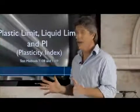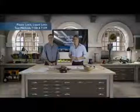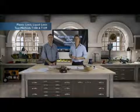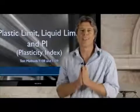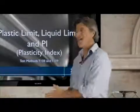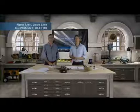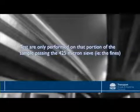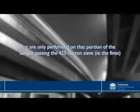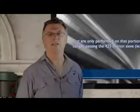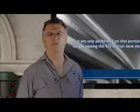The PI is useful because it gives an indication of the plastic characteristics of a soil or gravel, which is one of the most important characteristics for materials used in roads. But the test is not performed on the whole sample — the tests are only performed on that portion of the sample passing the 425 micron sieve. That's the fines, which means the test needs to be kept in perspective with the sample's grading.